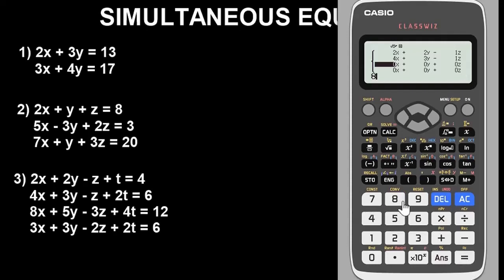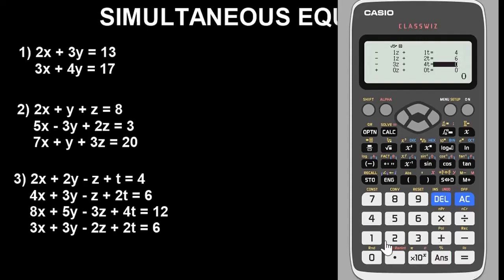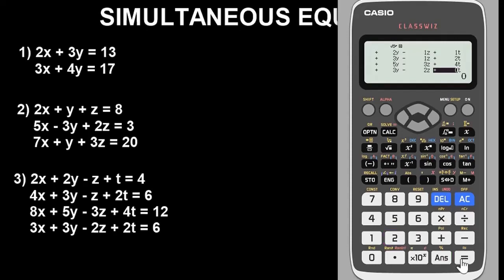For the third equation: coefficient of 8x is eight, coefficient of 5y is five, coefficient of negative 3z is minus three, coefficient of 4t is four, and the constant is 12. For the fourth and last equation: coefficient of 3x is three, coefficient of 3y is three, coefficient of 2z is two, coefficient of 2t is two, and the constant is 16.